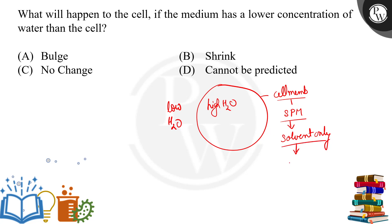Solvent ka size chota hota hai, to solvent jo hai high concentration se low concentration jaye ga. Is se kya hoga? Aapka cell, yani cytoplasm jo hai, agar yeh plant cell hai toh aapne cell wall ko chhodke andar aayega.